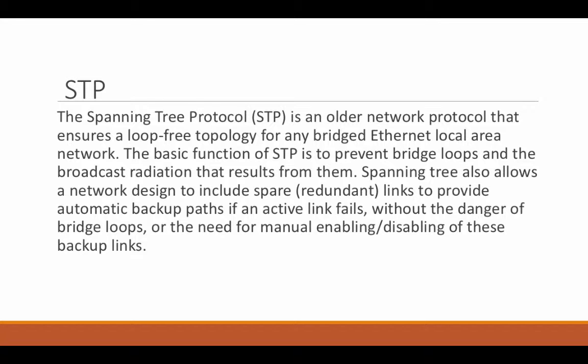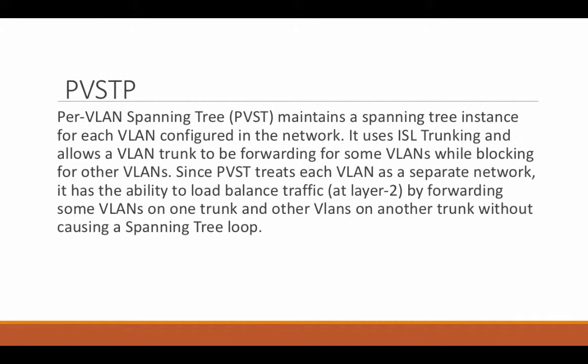STP would prevent that from happening. After STP you have PVSTP, which is per-VLAN STP. It maintains Spanning Tree instances for each VLAN configured on the network. It uses ISL trunking and allows a VLAN trunk to be forwarding for some VLANs while blocking for others. Since PVSTP treats each VLAN as a separate network, it has the ability to load balance traffic at layer 2 by forwarding some VLANs on one trunk and other VLANs on another trunk without causing a Spanning Tree loop.